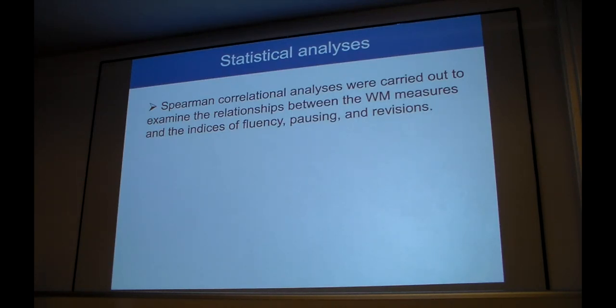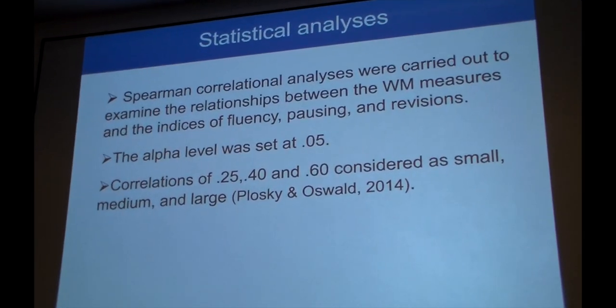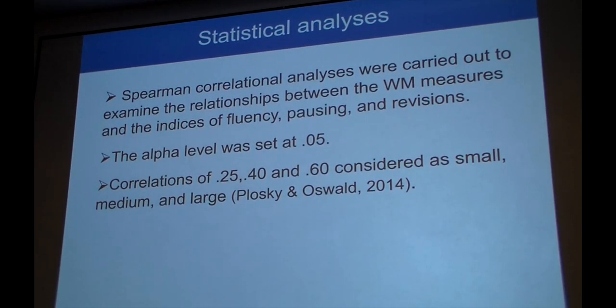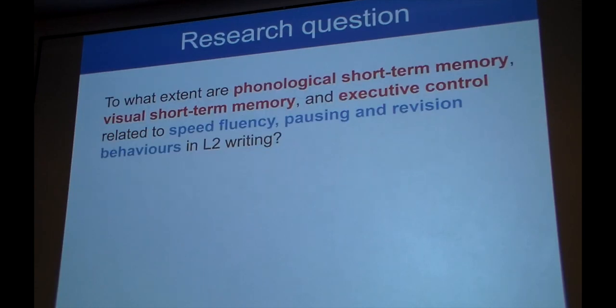We then ran correlation analysis to investigate how the working memory measures related to the speed fluency, pausing, and revision measures, and also the eye gaze behaviors. We decided to go with a less conservative alpha level because we had a relatively small number of participants. And we categorized correlations according to Plonsky and Oswald's field-specific criteria: 0.25, 0.40, and 0.60 were considered small, medium, and large respectively. So just to remind you of the research question, we were interested in investigating to what extent phonological short-term memory, visual short-term memory, and executive control are related to speed, fluency, pausing, and revision behaviors.